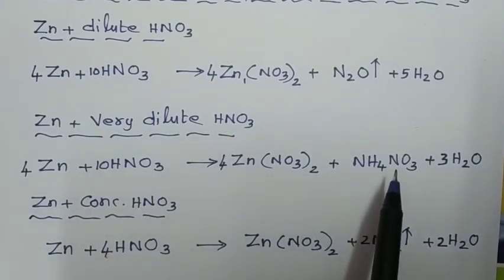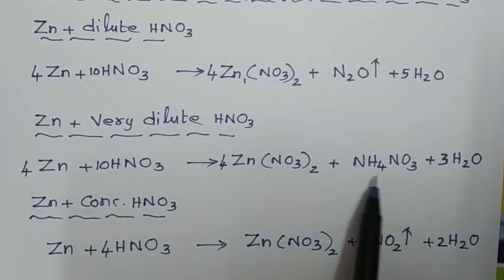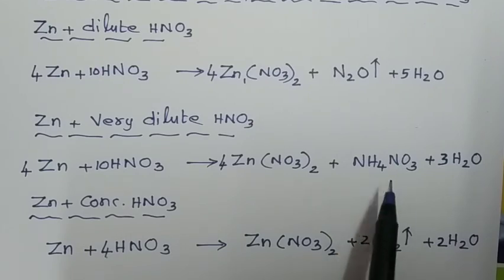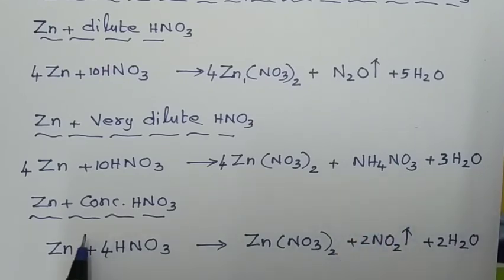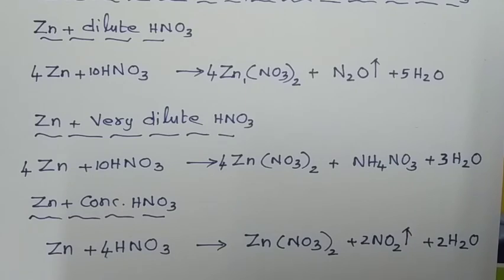So overall, remember: zinc with dilute nitric acid liberates nitrous oxide; with very dilute nitric acid it gives ammonium nitrate; and with concentrated nitric acid it liberates nitrogen dioxide. This is how zinc undergoes reaction with dilute, very dilute, and concentrated nitric acid. Thank you.